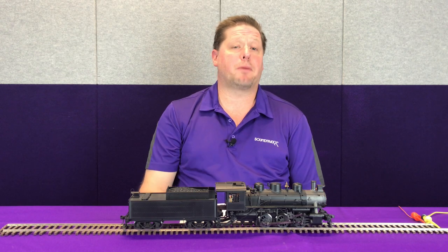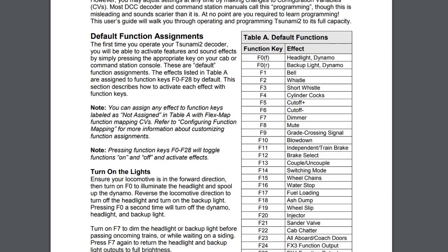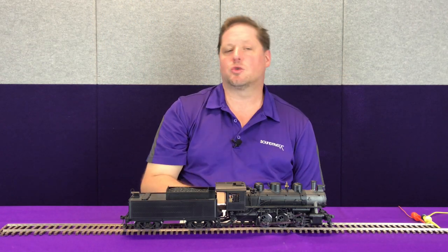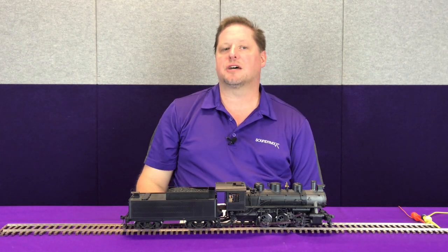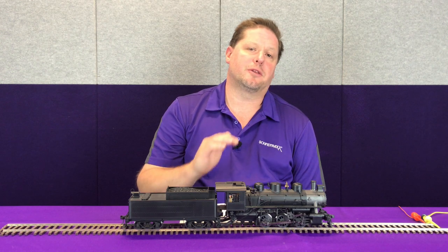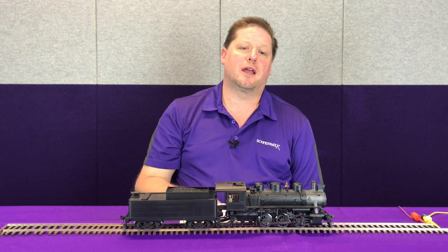So for example, by default, when we push the F1 key, the DCC signal sends an F1 command. The decoder goes into the function mapping and says, what am I supposed to do? I'm supposed to turn on the bell. Then it goes into a little bit more, and we'll get into more of those details in another video. But once you've told it to turn on the bell with F1, the decoder turns on the bell.